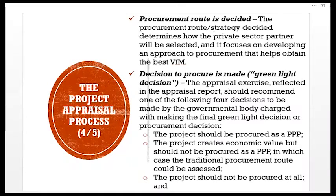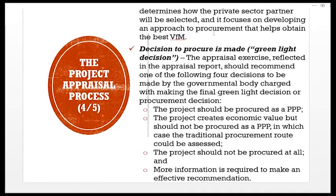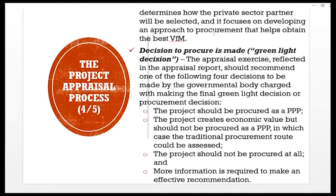The four possible greenlight decisions are: the project should be procured as a PPP; the project creates economic value but should not be procured as a PPP, in which case the traditional procurement route could be assessed; the project should not be procured at all; and more information is required to make an effective recommendation.